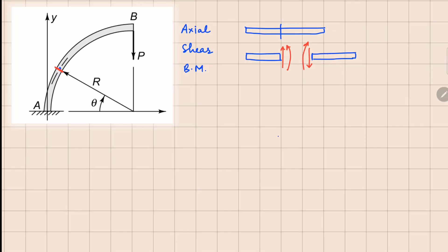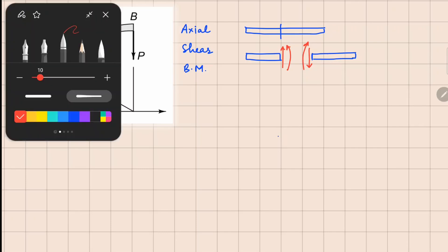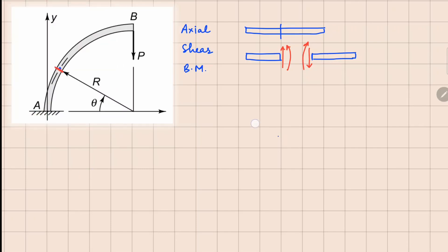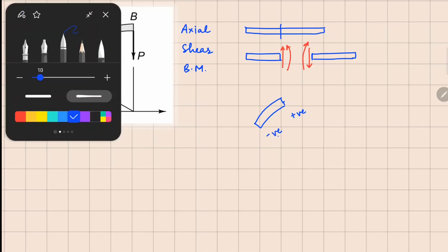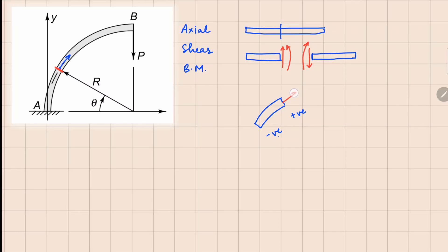Now for this arch also we need to follow a sign convention. So let's first decide on that. If you are cutting this at an angle theta, maybe this small dx element comes out. Now here also since your theta is going this way positive, we can take this face to be a positive face and this one to be a negative face. On the positive face, we can take all the quantities in positive direction.